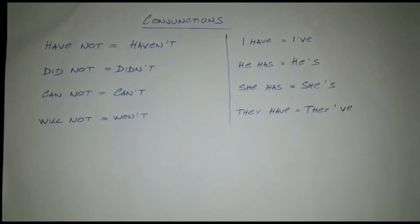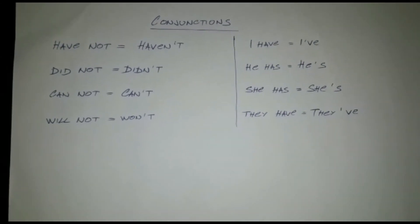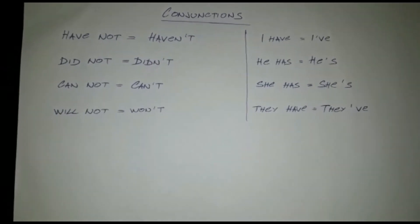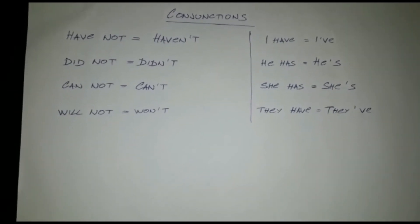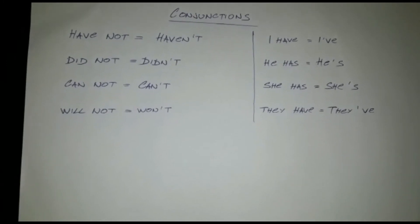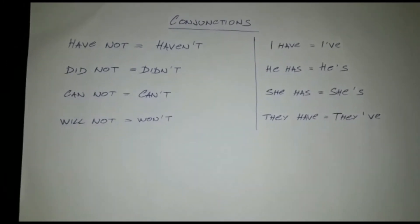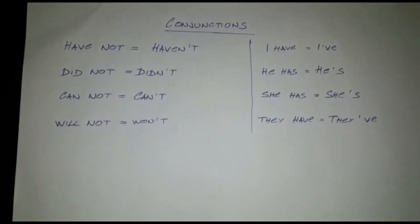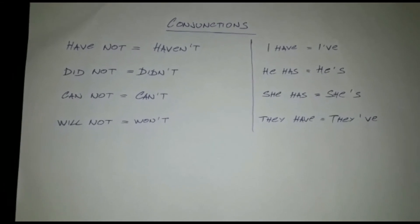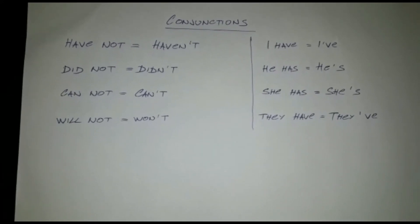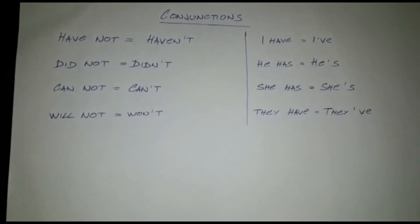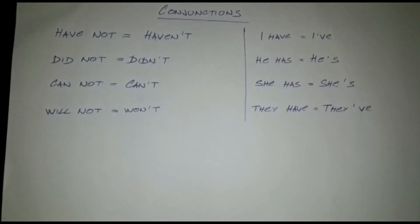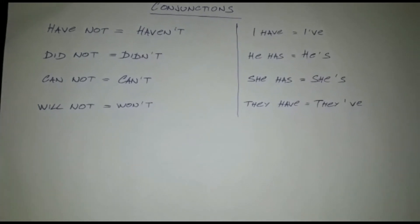Now let's talk about contractions. In the English language, many times when people are talking they will shorten their speaking, so it's important to understand these contractions — it's actually combining two words into one. So, have not becomes haven't. Did not becomes didn't. Cannot becomes can't. Will not becomes won't. I have becomes I've. He has becomes he's. She has becomes she's. And they have becomes they've.